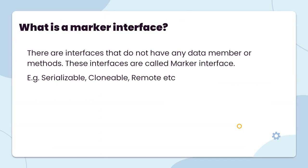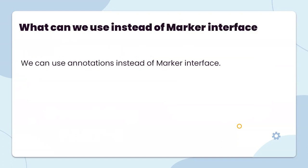What is a marker interface? A marker interface is one that does not have any data or methods. These interfaces are called marker interfaces. Examples include Serializable, Cloneable, and Remote. Those interfaces don't have any data or variables — just the interface name is there.